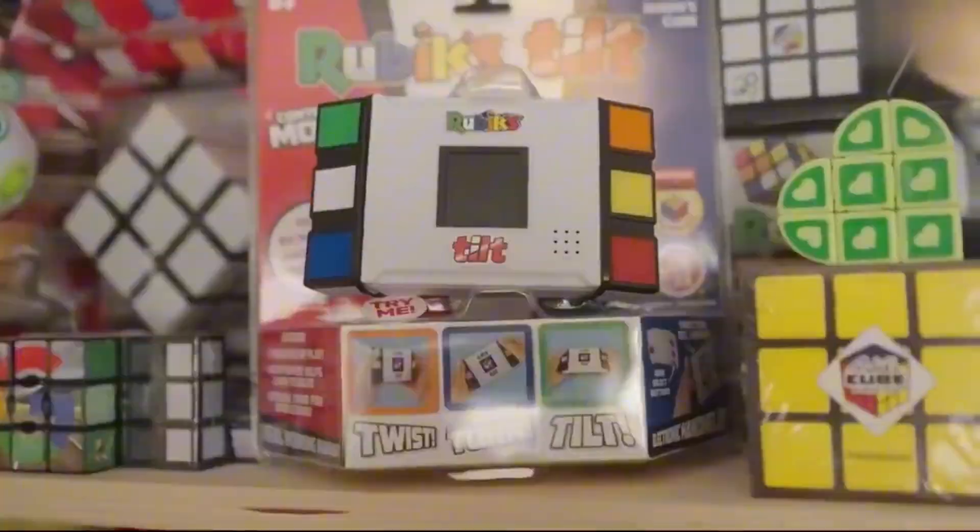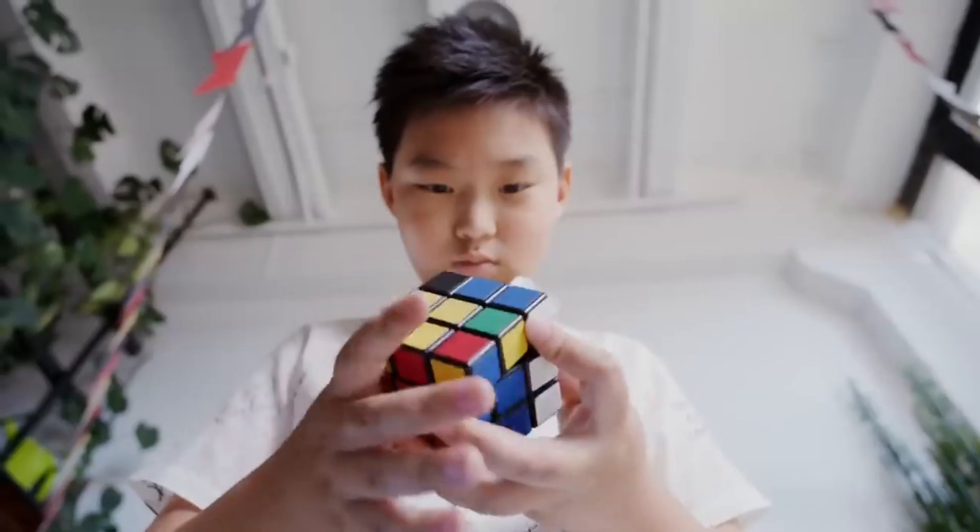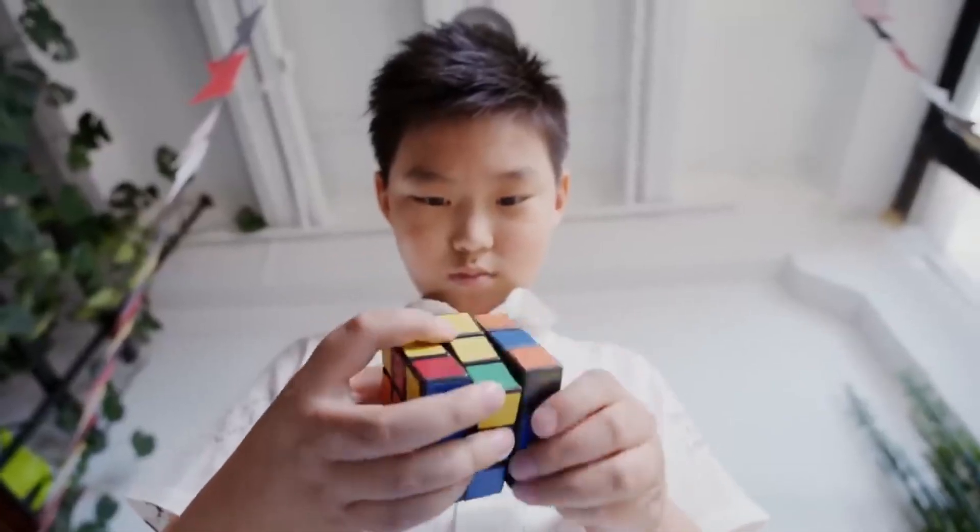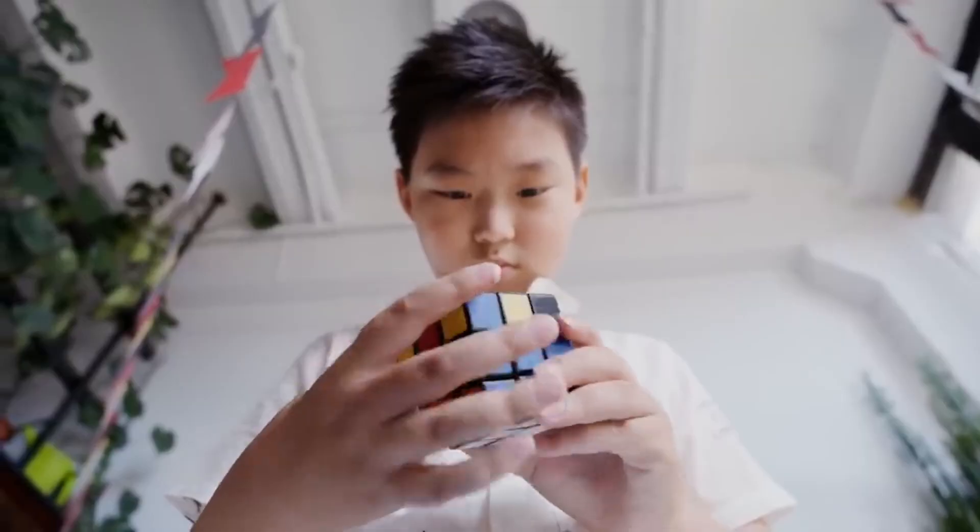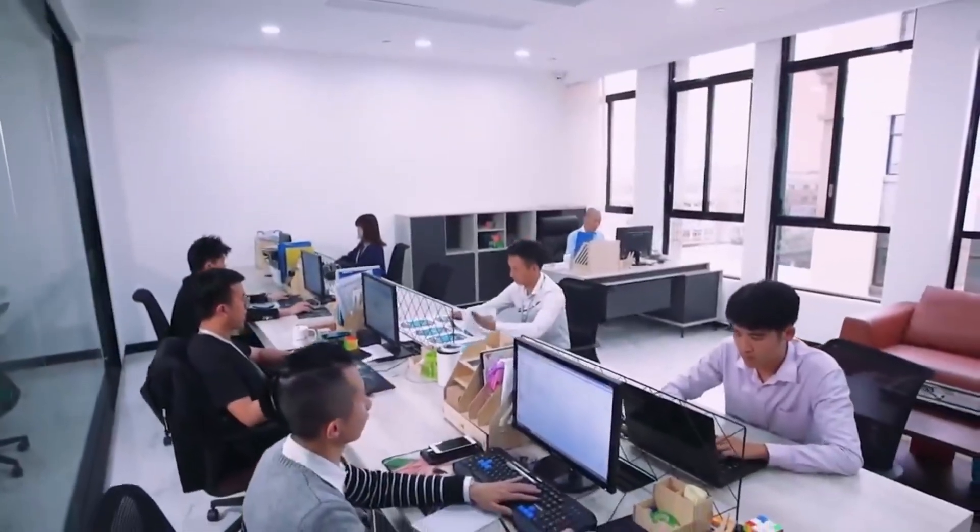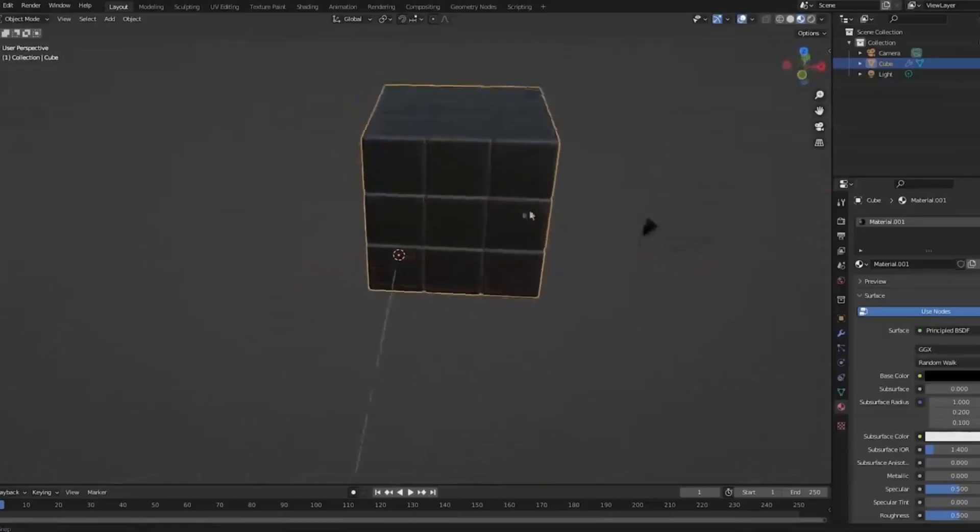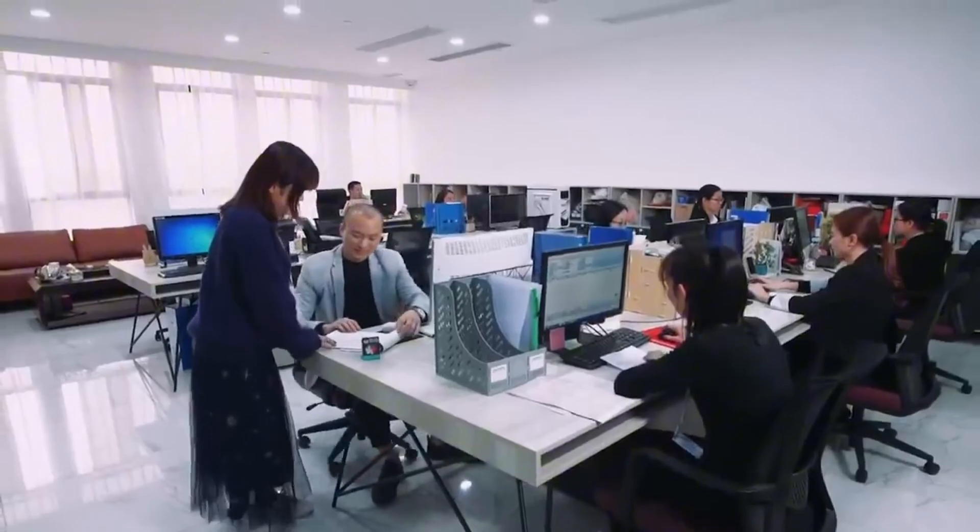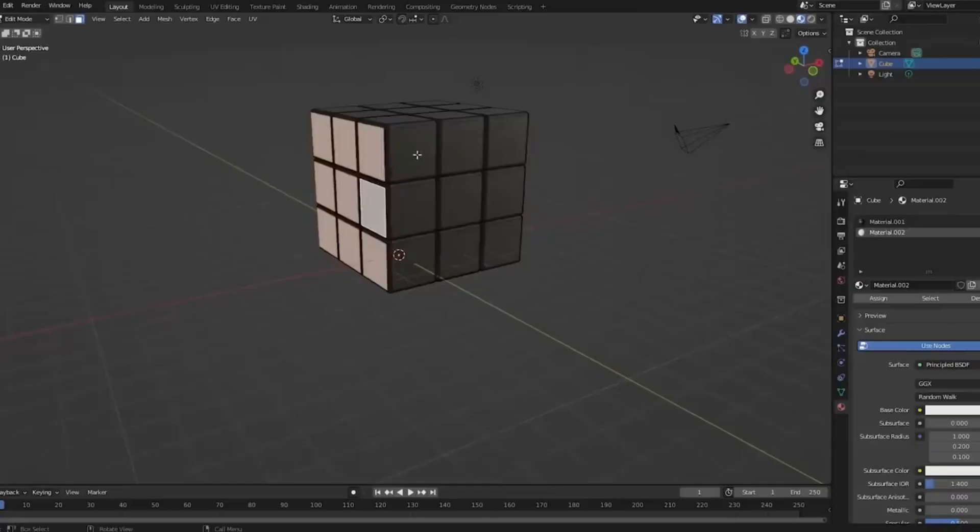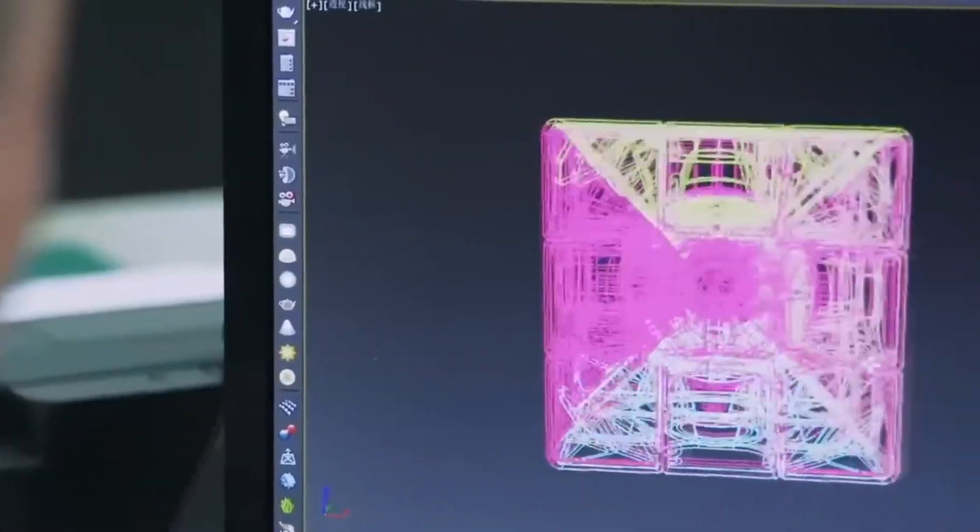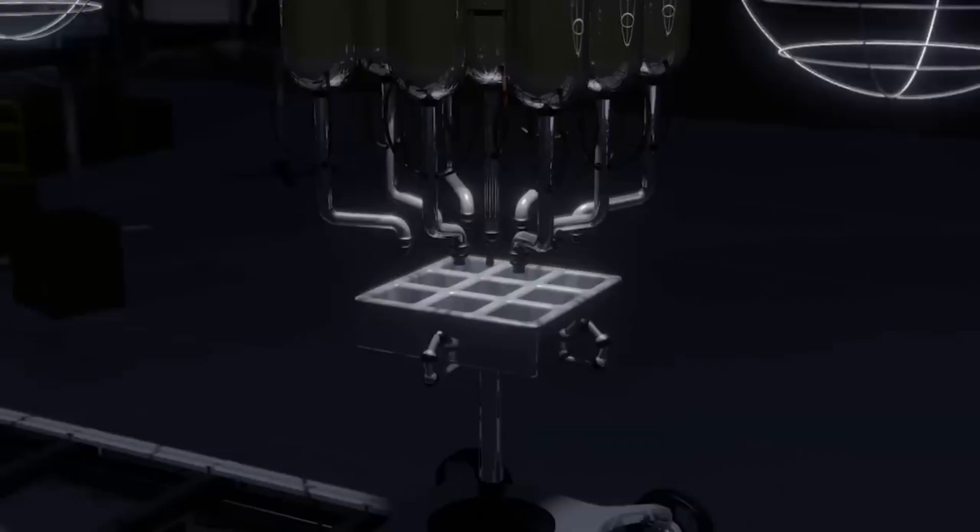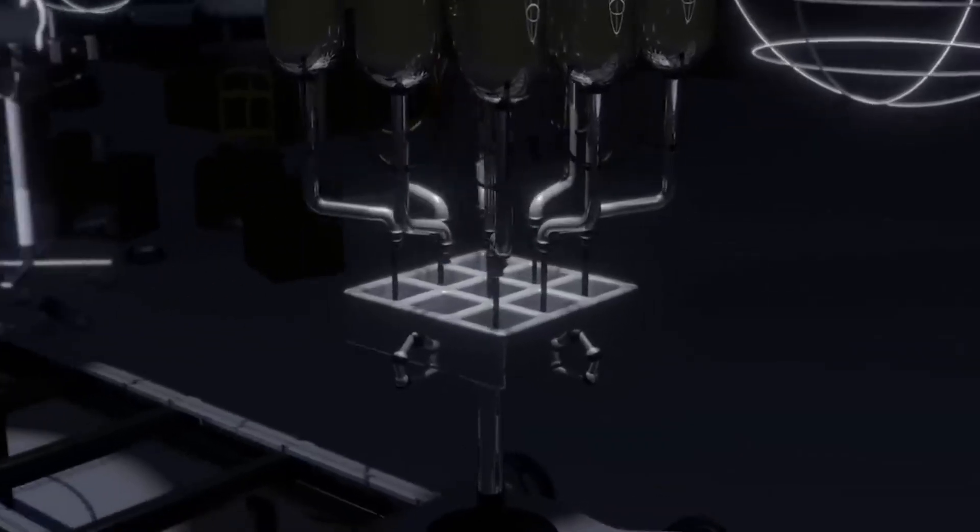Now, let's dive into the meticulous manufacturing process of this ingenious invention. It all starts with designing and prototyping. Experienced engineers and creative designers use specialized software to model the cube in three dimensions, allowing for a detailed view of every aspect of the design. This process is not only limited to the visual appearance of the cube, but also encompasses its inner workings.